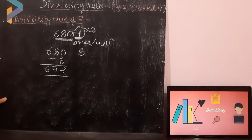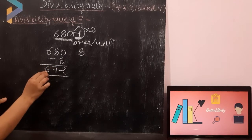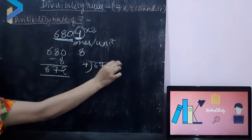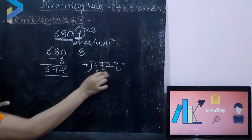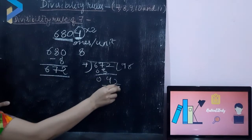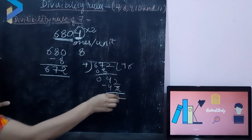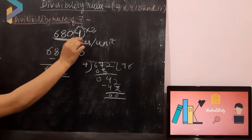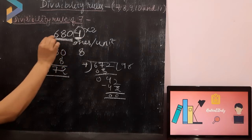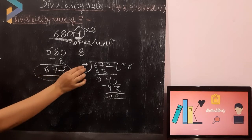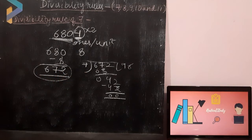So we have to check whether 672 is divisible by 7 or not. 7 nines are 63, 7 sixes are 42. So as we can see, this is divisible by 7. To check divisibility by 7, the first step is to double the digit at unit's place. After doubling, subtract it from the rest of the number. The answer should be divisible by 7.